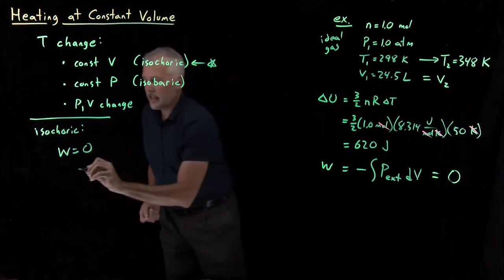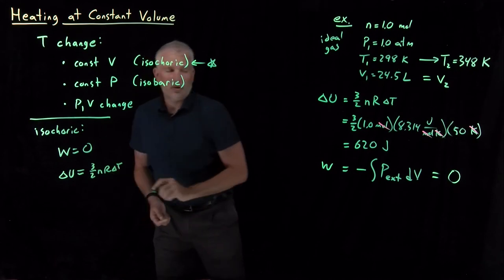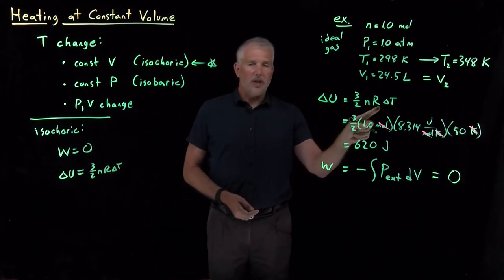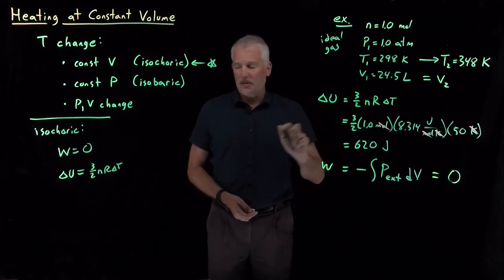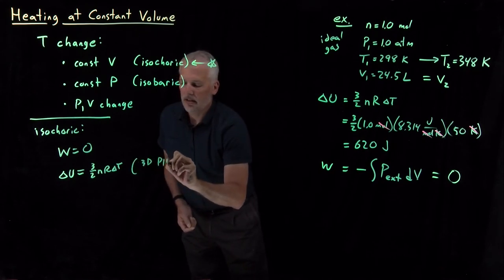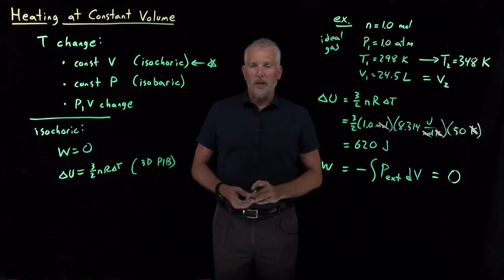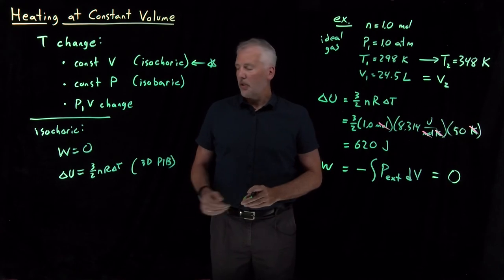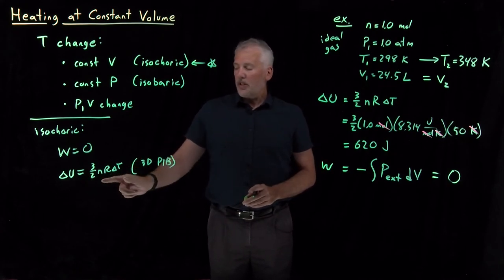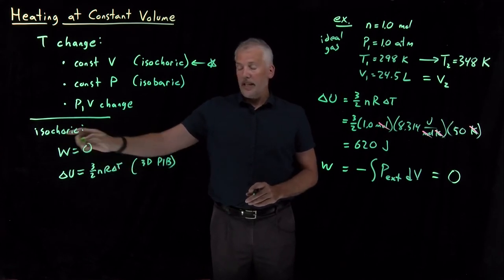I can say delta U is 3 halves nR delta T. That's not true for every isochoric process. It's only true for ideal gases. I can use this equation for any system that I could use the 3D particle in a box model to describe like the ideal gases we've been considering. So delta U is 3 halves nR delta T if it's an ideal gas. Work is zero anytime it's isochoric.